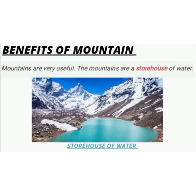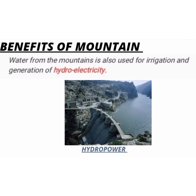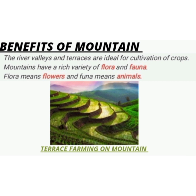Now what are the benefits of mountains? Mountains are very useful. They are also storehouses of water. Many rivers have their sources in the glaciers in the mountains. Reservoirs are made and water is filtered and stored for the use of people. Water from the mountains is also used for irrigation and generation of hydroelectricity. The river valleys and terraces are ideal for the cultivation of crops. Mountains have a rich variety of flora and fauna — flora means plants and fauna means animals.